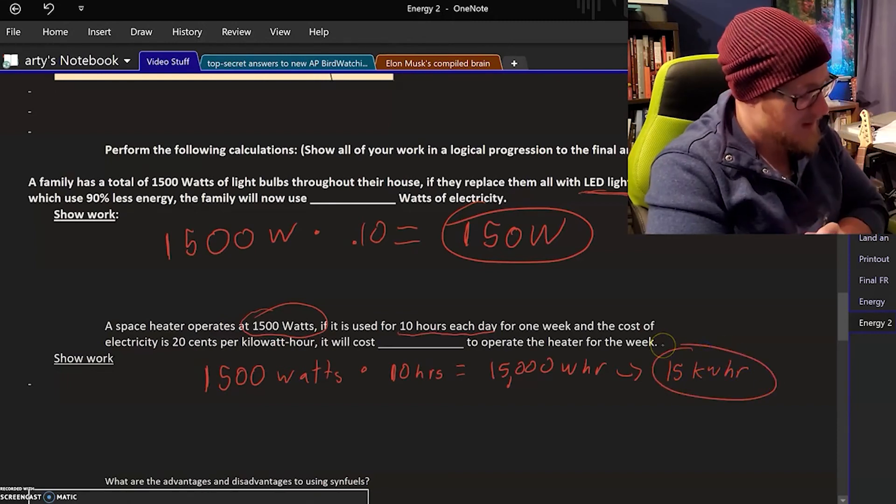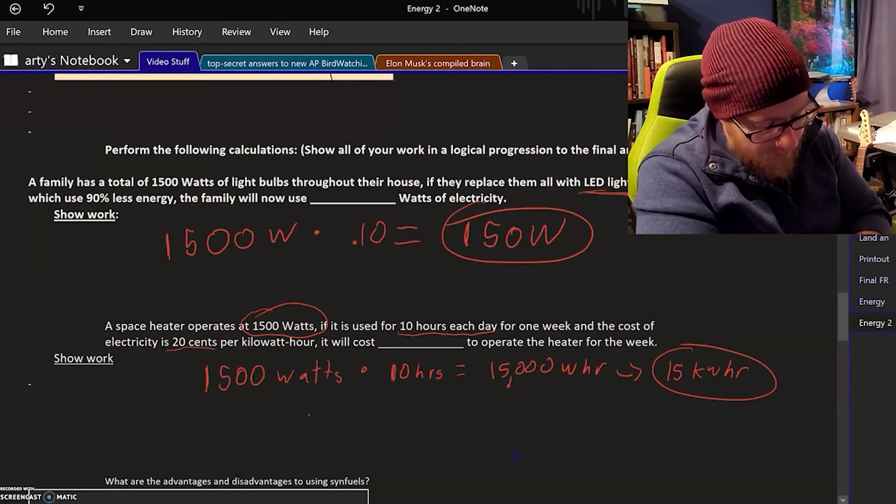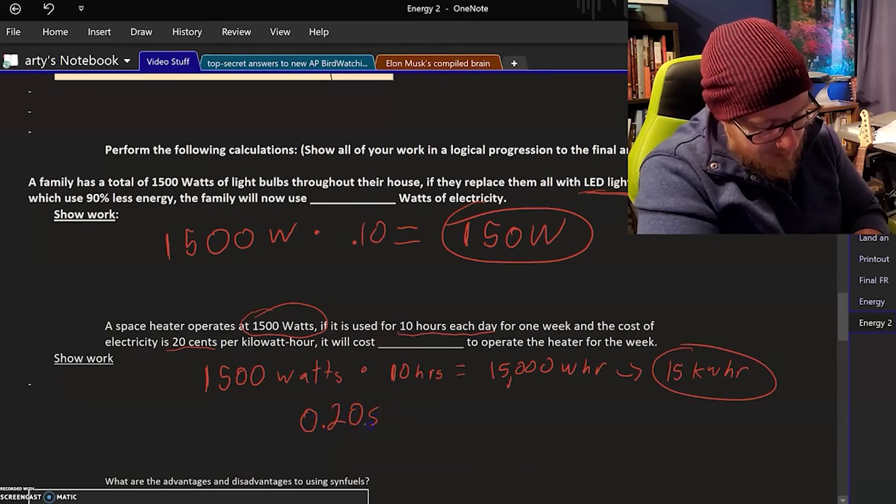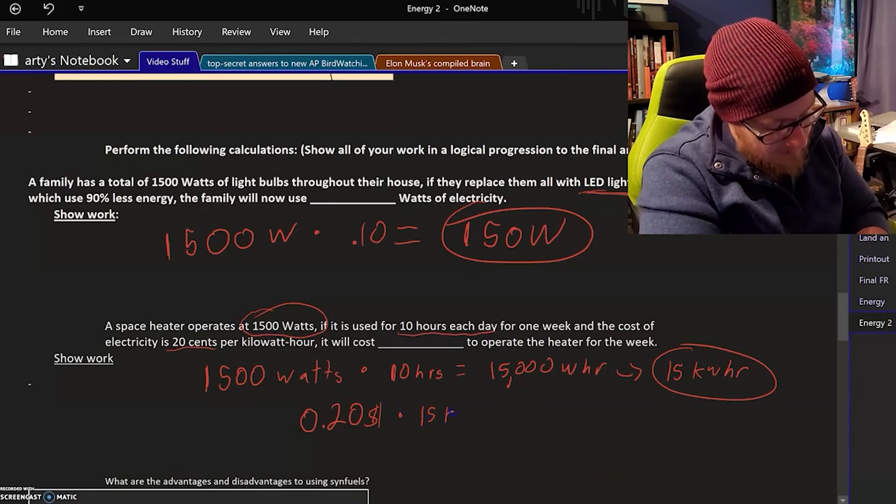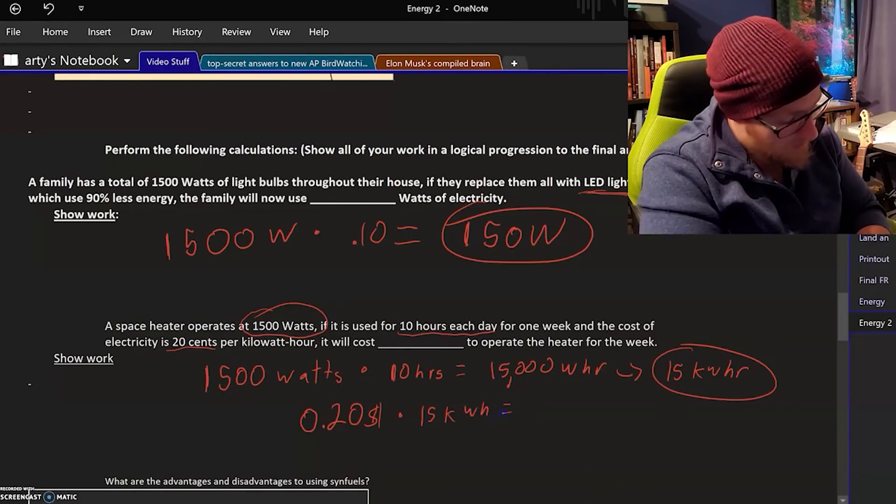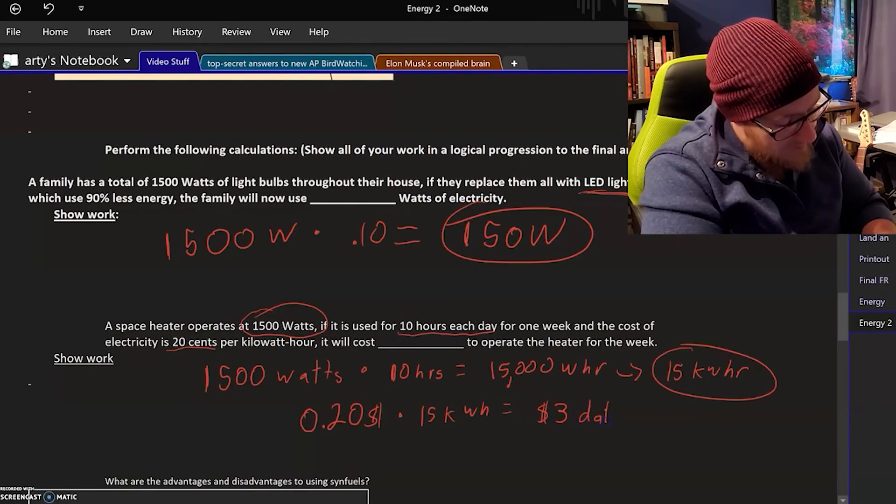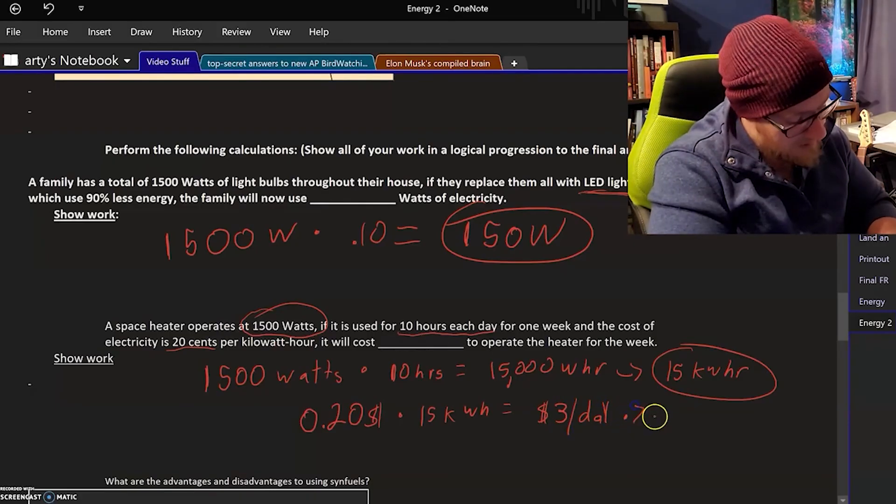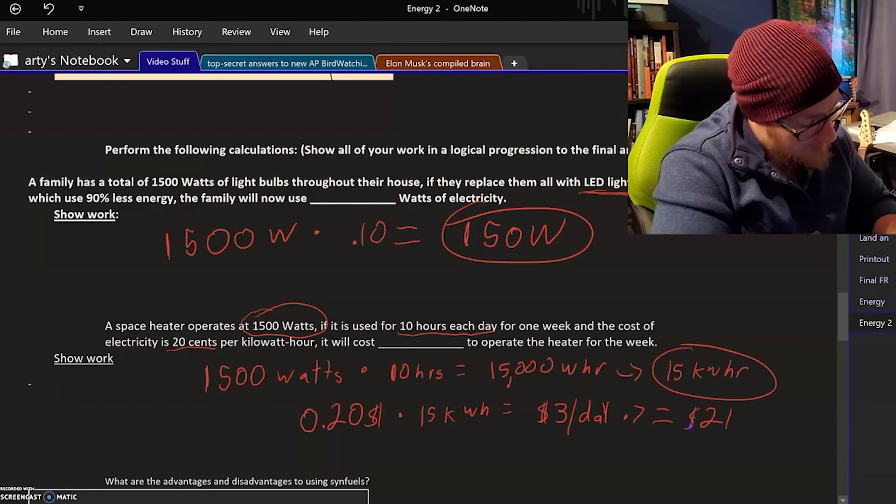If energy costs 20 cents per kilowatt hour, 0.20 in dollar mode times 15 kilowatt hours, we are using about $3 per day worth of energy. There are seven days in a week times seven, so that space heater costs about $21 per week to operate.